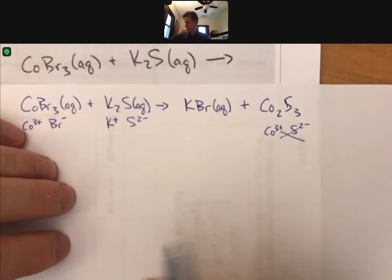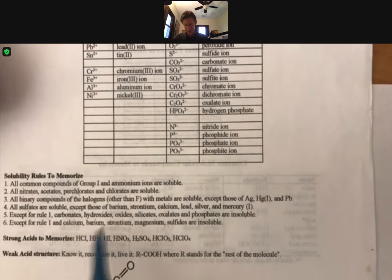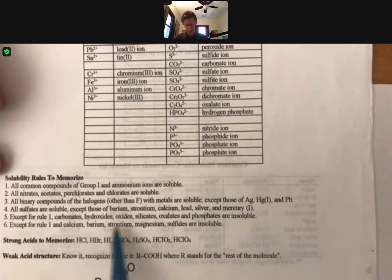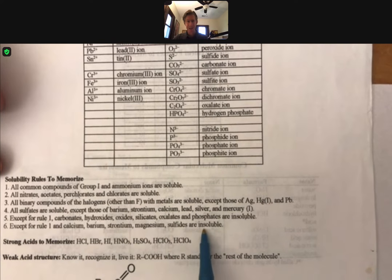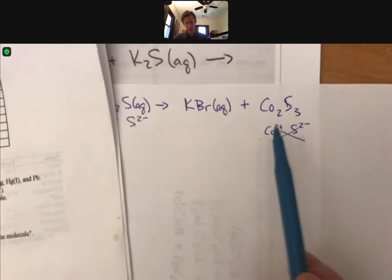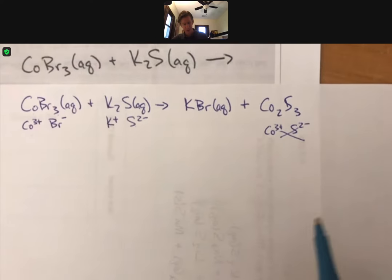And then there is a rule, rule number six for sulfides. And rule number six for sulfides says, except for rule number one in calcium, barium, strontium, magnesium, sulfides are insoluble. And we're not dealing with any of those. We're dealing with cobalt three sulfide. So this will be a solid.